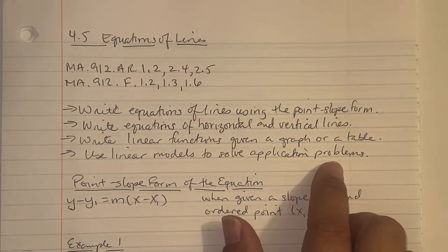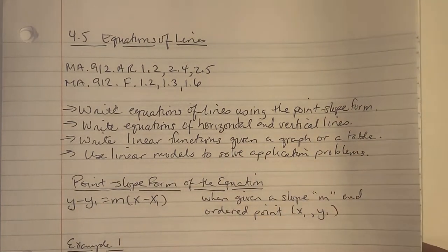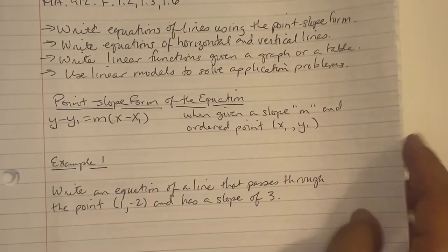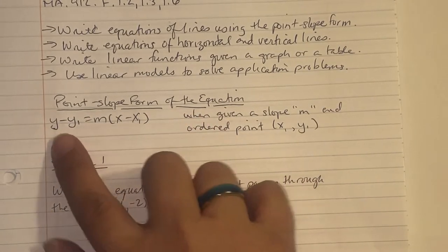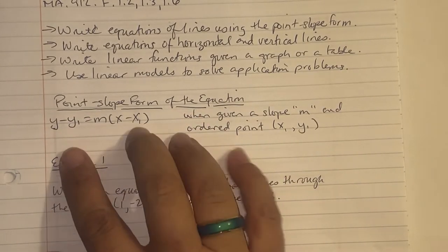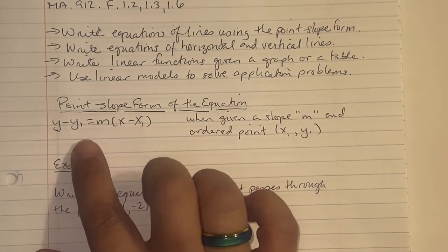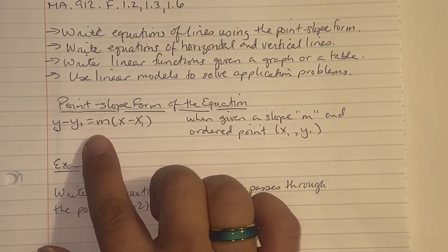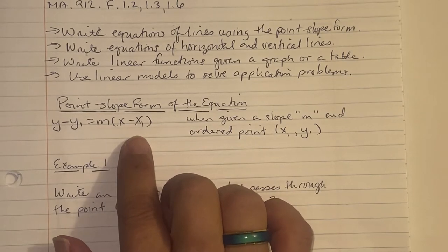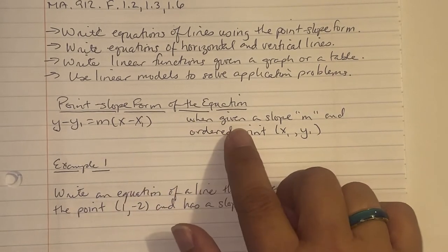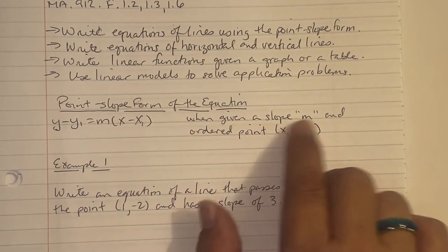Point-slope form of the equation: the formula is y minus y₁ equals m times x minus x₁, when you are given a slope m and an ordered point (x₁, y₁).